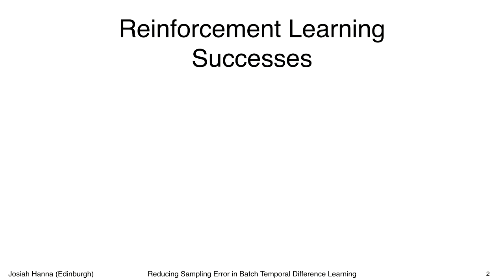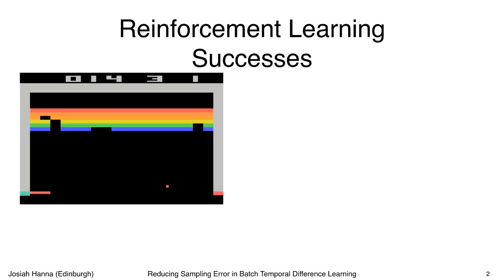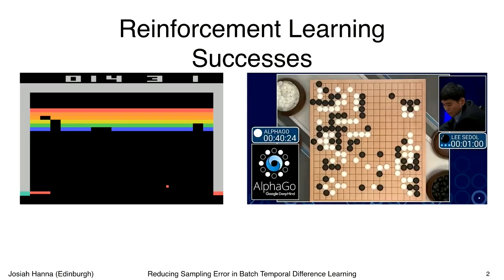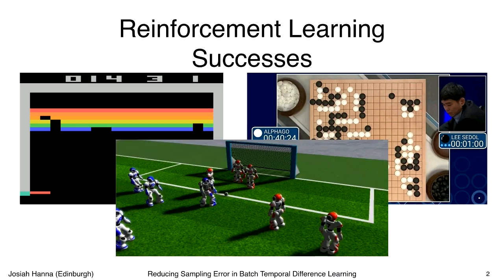Reinforcement learning is becoming an increasingly popular area mainly because of some striking successes which have happened in the past few years. For instance, we've seen superhuman performance at video game playing where a computer completely learns to play the game just from looking at the screen. In the game of Go, the human world champion was defeated by a computer using reinforcement learning and search techniques. There have been many more applications, such as simulated robots which have learned skills like playing soccer just through interacting with a task.